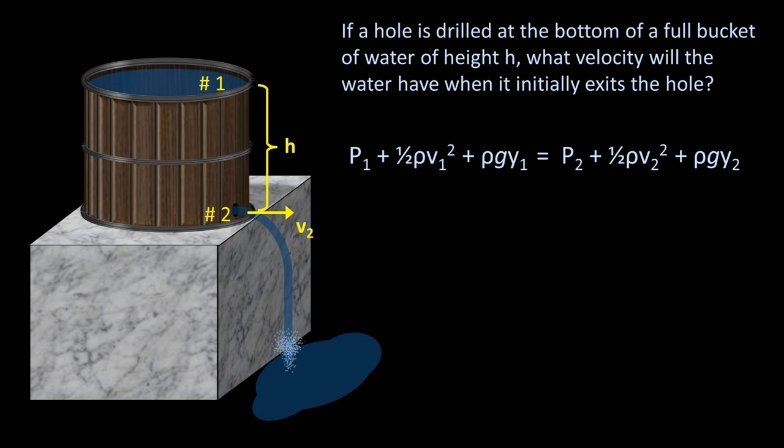So how can we substitute in for the missing variables? First, the pressure of point 1 is atmospheric pressure.